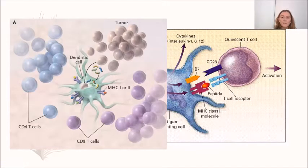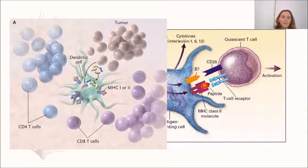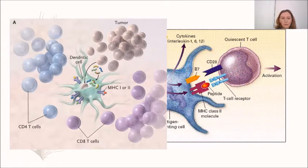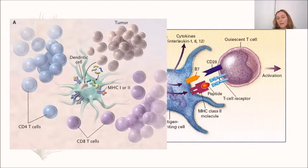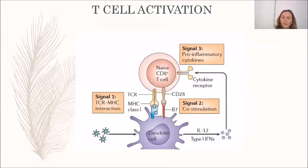One important interaction for the beginning of adaptive immune response is the interaction between the dendritic cell, which belongs to innate immunity, and T lymphocytes. Dendritic cells can process the antigen and present it within a molecule of the major histocompatibility complex (MHC) type I or type II, presenting the peptide to the T cell receptor for activation.